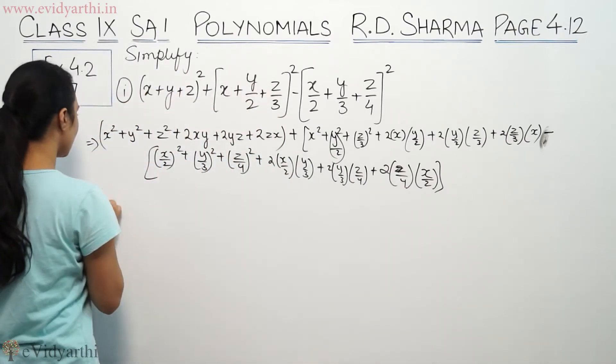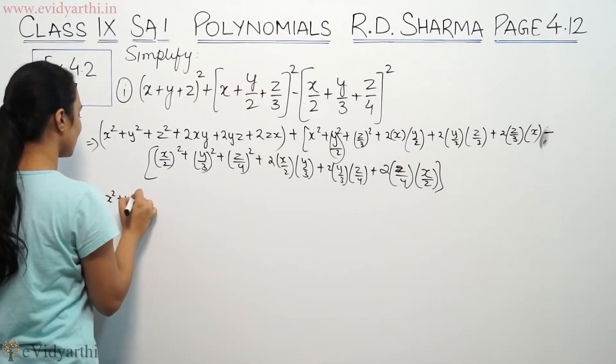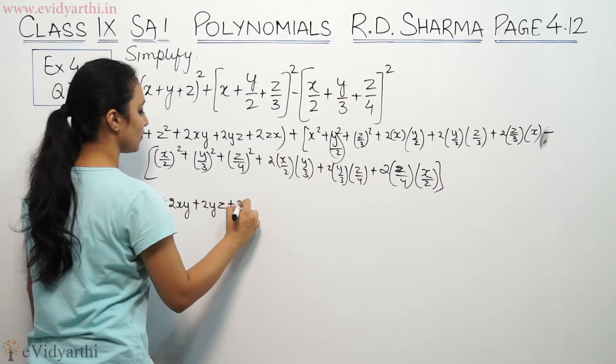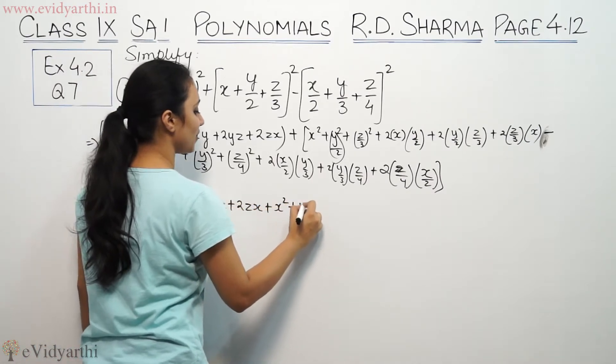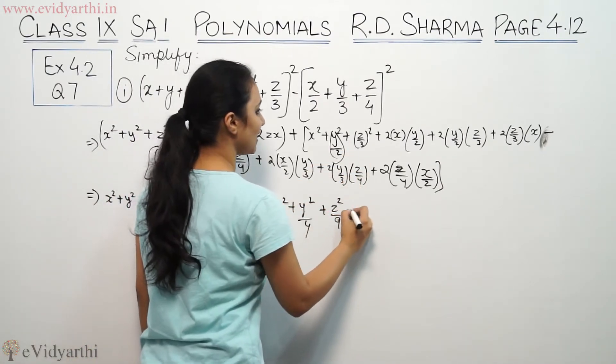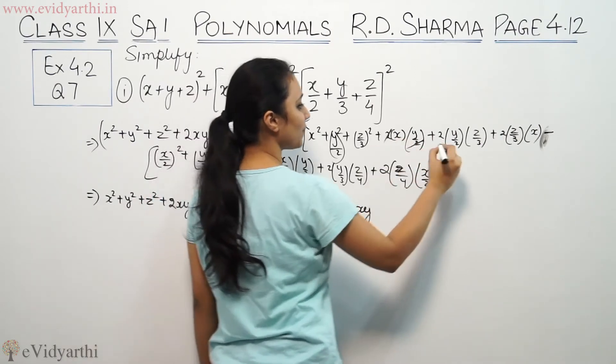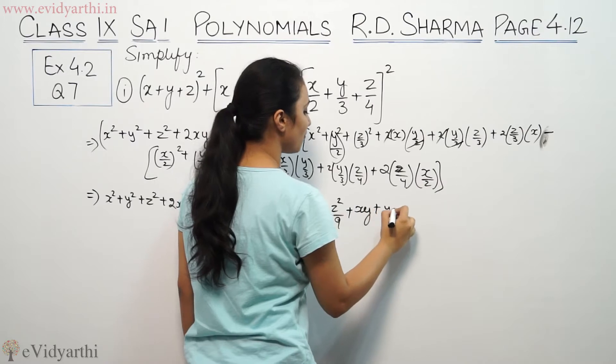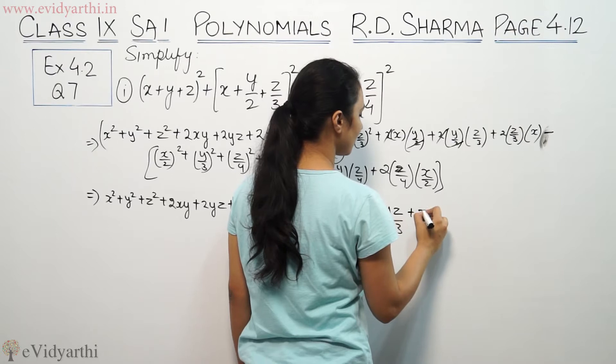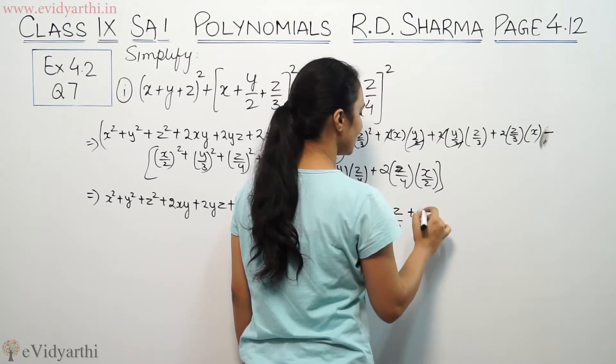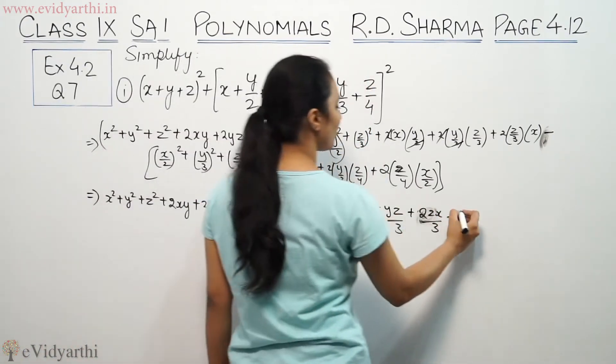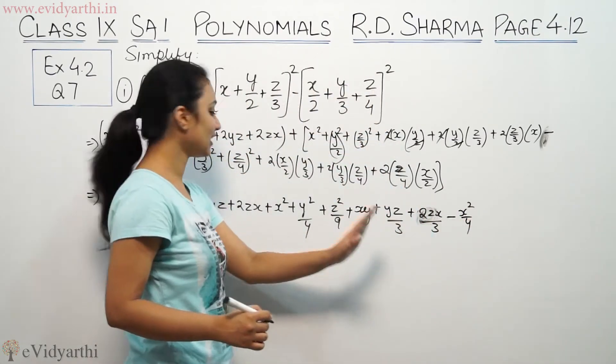Opening all brackets, this is x²+y²+z²+2xy+2yz+2zx plus x²+y²/4+z²/9+xy+yz/3+2zx/3. Opening the negative bracket, we get -x²/4-y²/9-z²/16.